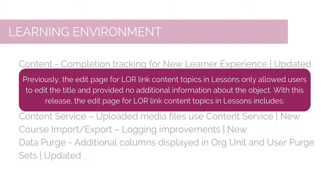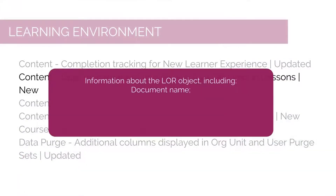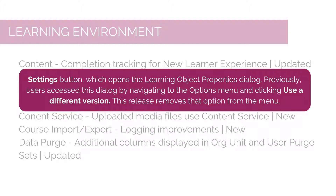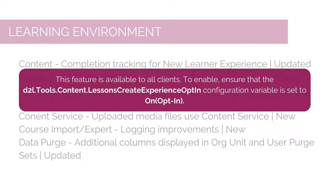With this release, the edit page for LOR link content topics in Lessons includes the ability to change topic name and display option, add or change due date, start date, and end date, information about the LOR object including document name, version number, last edit date, file type, and repository name, as well as a Settings button which opens the Learning Object Properties dialog. Previously, users accessed this dialog via the Options menu by clicking 'Use a Different Version', which has been removed. This feature is available to all clients; to enable, ensure the d2l.tools.content.lessonsCreateExperienceOptInConfiguration variable is set to OnOptIn.